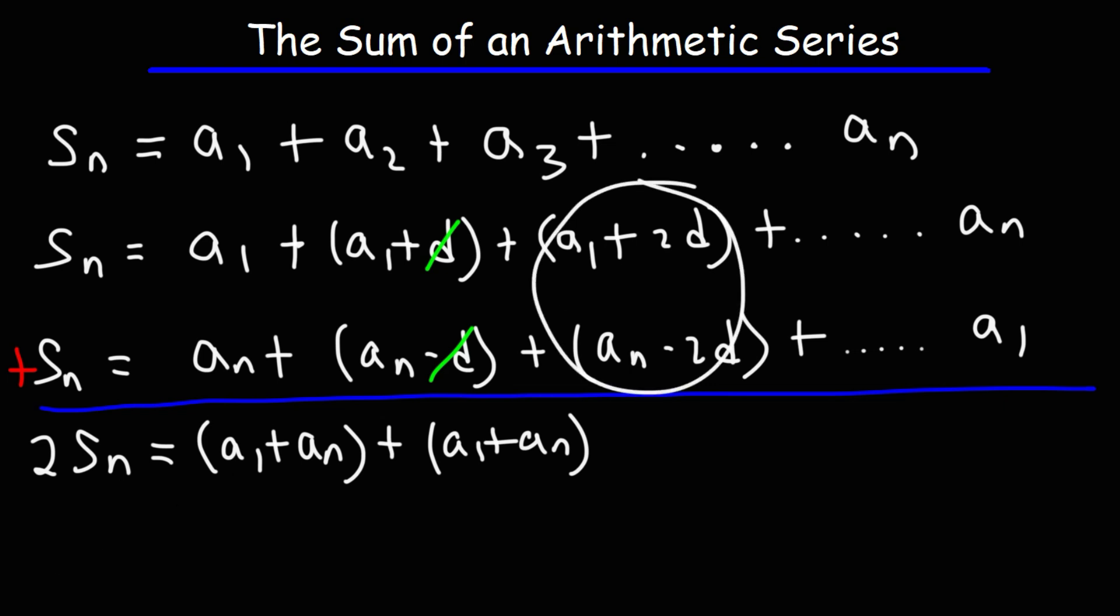Now if we add these two, 2d and negative 2d will cancel. And so we're left with a sub 1 plus a sub n. And this pattern will continue until we add the last two terms, which is also a sub 1 plus a sub n.